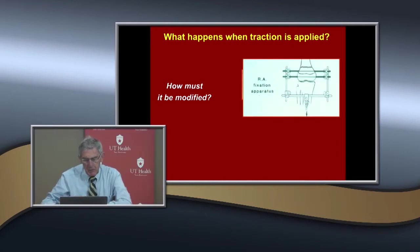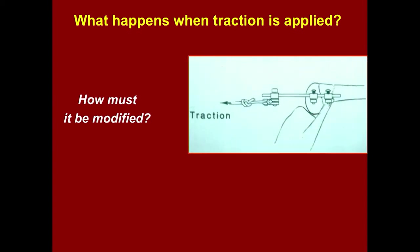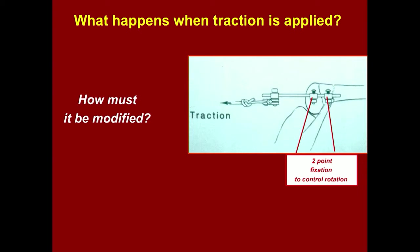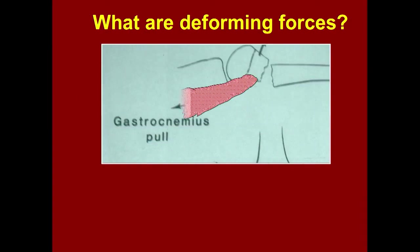We don't do this much anymore, but if you want to treat this in traction, you have to have two-point fixation to control the rotation — you can put one pin in the epiphysis and one in the metaphysis. If you only have one point, it'll rotate around that one point.